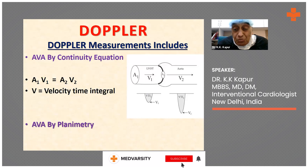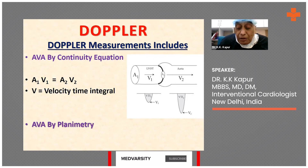Occasionally, if the valve is just mildly calcified, we can measure the aortic valve area by planimetry.